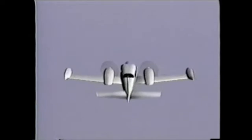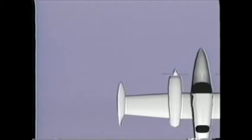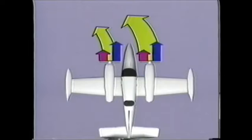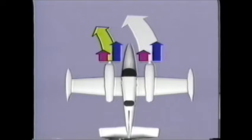P-factor is produced in the same way for twins as it is for single-engine airplanes, but its effects are greater. A left turning tendency is created at high angles of attack when the descending propeller blade produces more thrust than the ascending blade. This asymmetrical propeller loading causes an even greater yawing tendency in a twin-engine airplane because there are now two descending propeller blades. Also, the right engine exerts more of a yawing tendency than the left engine because its P-factor works farther from the centerline of the aircraft.